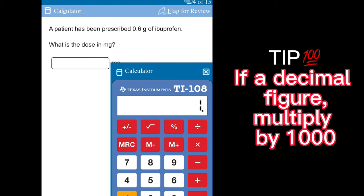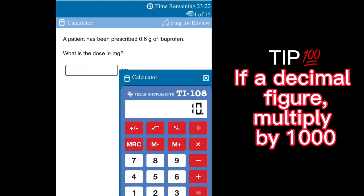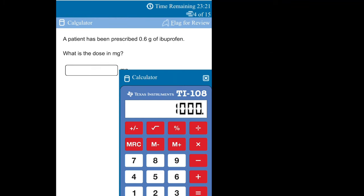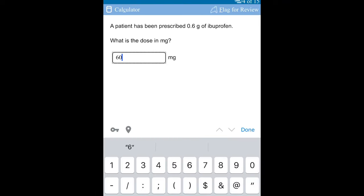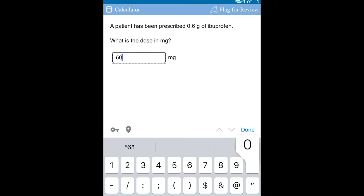Our next question is asking us to provide the number of tablets to be administered if the prescribed dose is 300 milligram. You just go ahead and divide your 300 by the 100, and then you get three tablets.